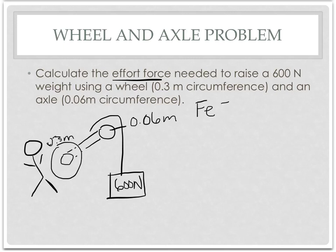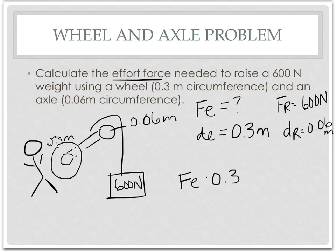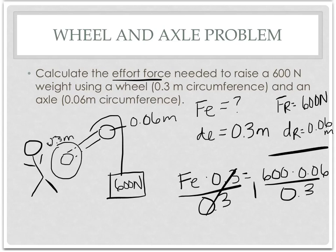So FE, our effort force, is what the problem is asking for. So we don't know that. But our DE is the circumference of the wheel, so that's 0.3 meters. Our FR is the weight of what's being lifted, so 600 newtons. And our DR is the radius of the axle, which is 0.06 meters. So we're going to have FE times 0.3 equals 600 times 0.06. Then to get FE by itself, you divide by 0.3. And this simplifies to 120. So your FE equals 120, and your units should be newtons.